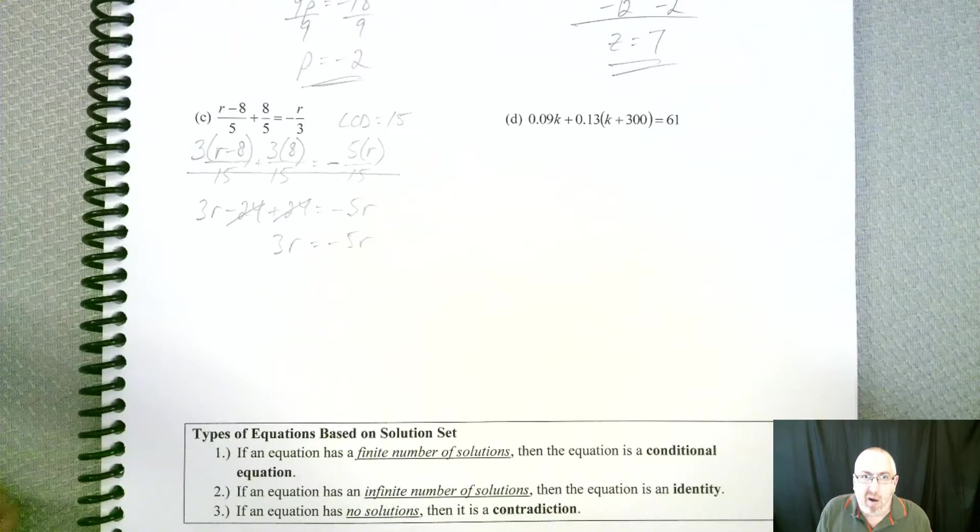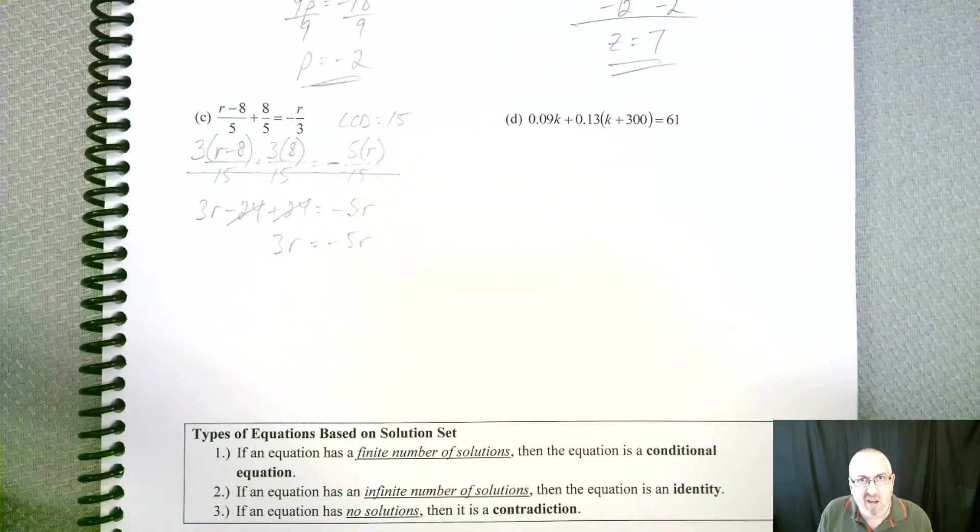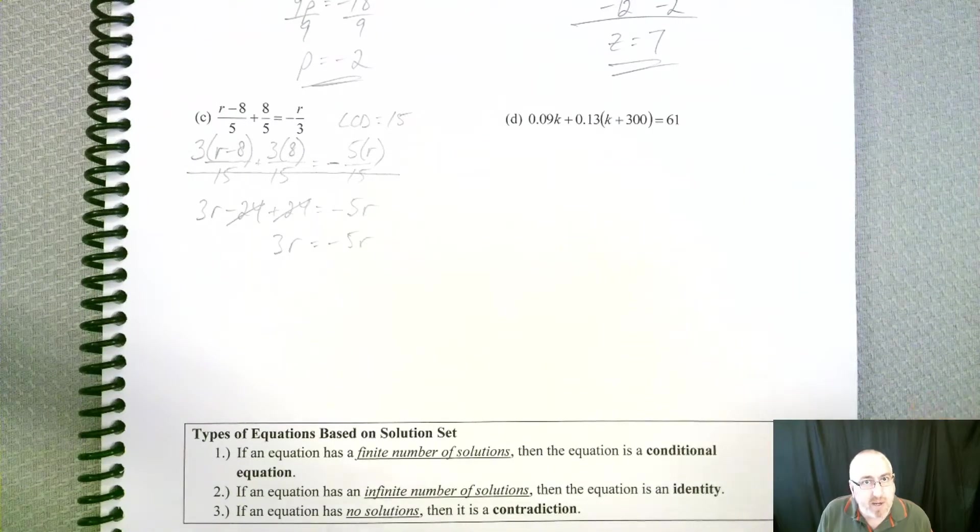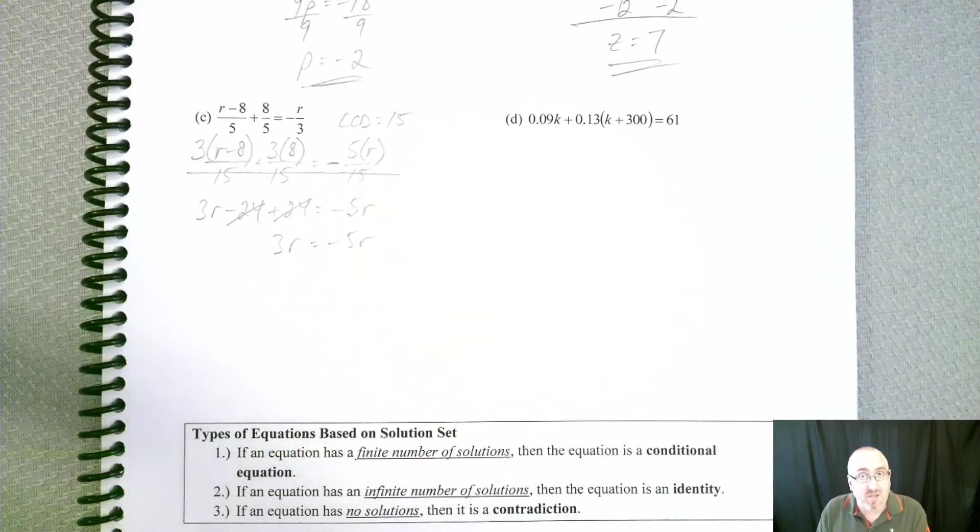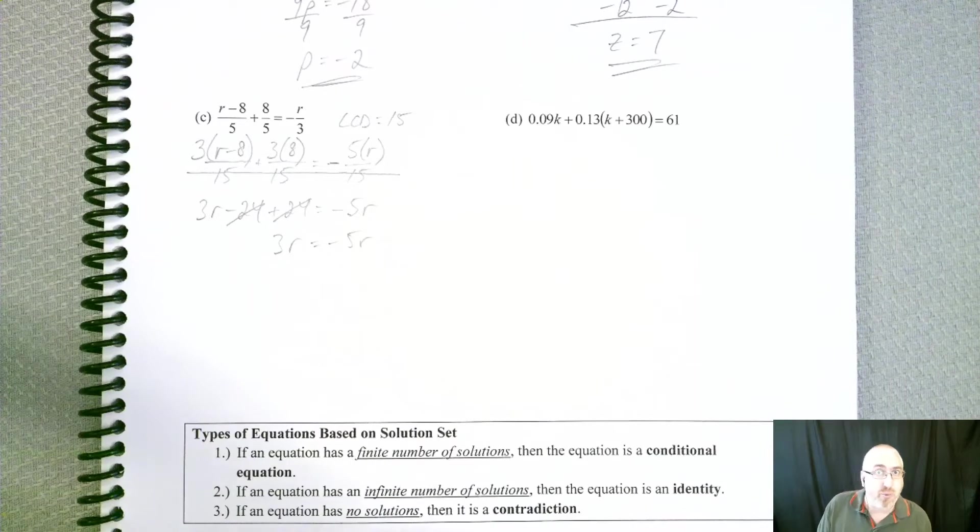And so now, do we divide? Well, we don't divide yet because we've got R's on both sides of the equals. We want all the R's on one side. So now which one should we move?